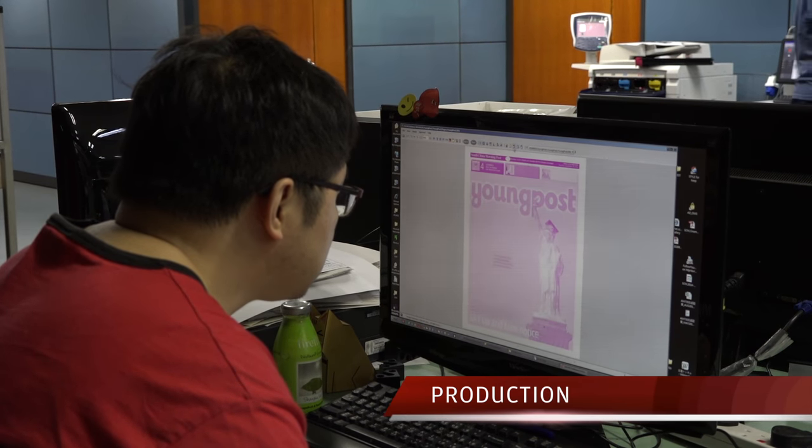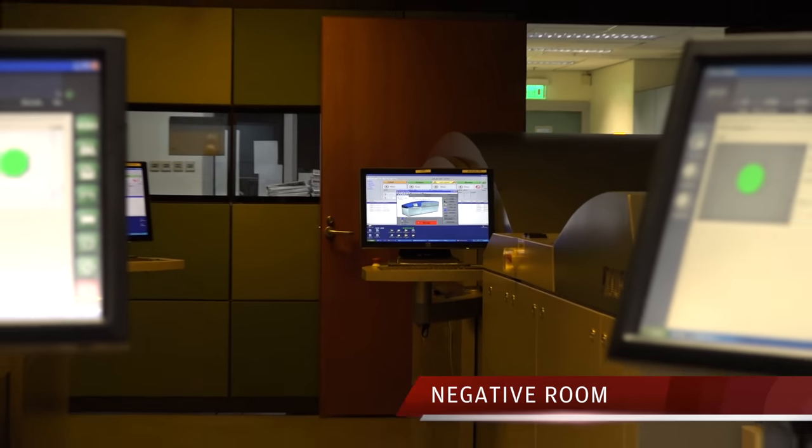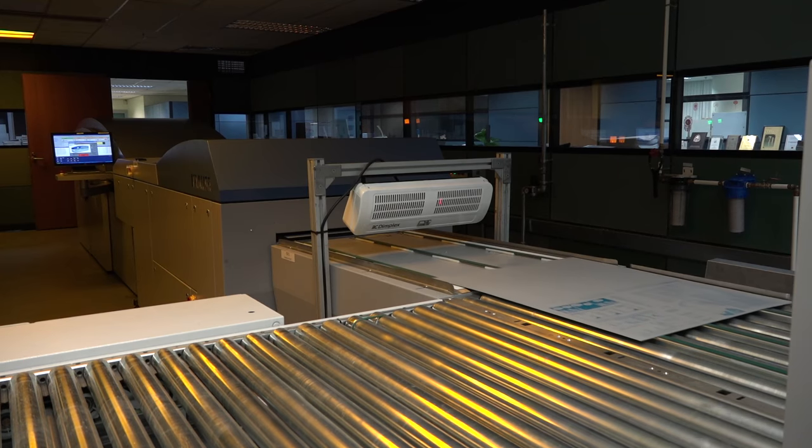In the production department all pages are checked by an operator. A laser transfers the separated image onto the plate, hardens the plastic coating of the plate wherever there is text and images.